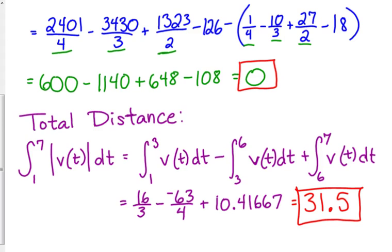His displacement, he ended up right back where he started, but in total, moving between left and right directions, he traveled 31.5 units. So the big thing is, any parts of your graph that are below the axis, you've got to subtract that integral because it's going to make that negative area positive. And then the other parts, you just calculate like normal, and you're going to add those pieces together.